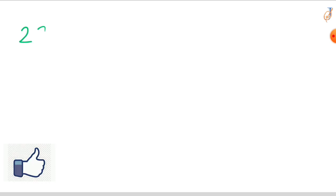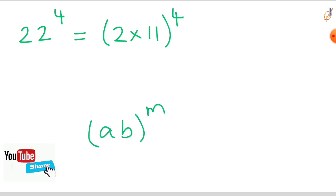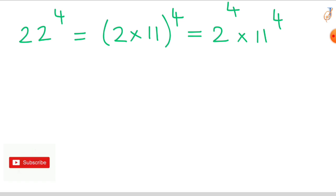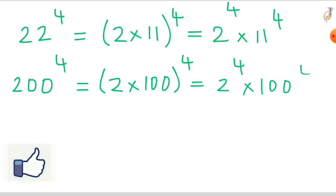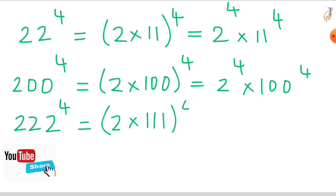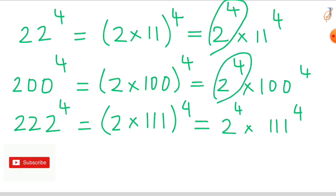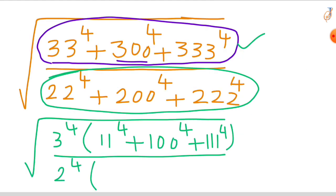Now observe the denominator. 22 raised to the power of 4 can be written as 2 times 11 raised to the power of 4, which equals 2^4 times 11^4. The second term, 200 raised to the power of 4, equals 2^4 times 100^4. Similarly, 222 raised to the power of 4 equals 2 times 111 raised to the power of 4, which gives 2^4 times 111^4. Factoring out the common factor 2^4, the denominator becomes 2^4 times (11^4 + 100^4 + 111^4).